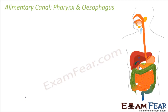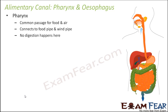Now that we have discussed mouth and buccal cavity, it's time for pharynx and esophagus. We saw that food entered through the mouth, went into the buccal cavity where it got mixed with saliva and was broken down into smaller pieces by teeth. Now this food moves into the pharynx. Pharynx is a common passage for both food and air — it connects to both the food pipe and the wind pipe.